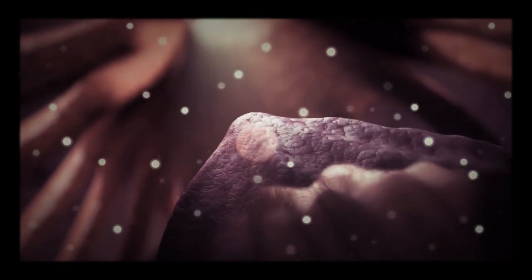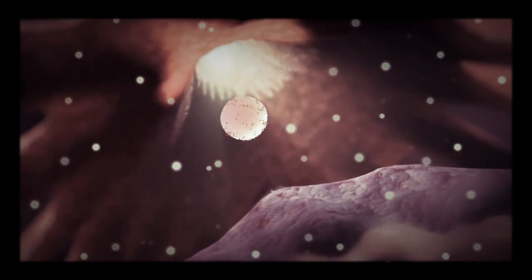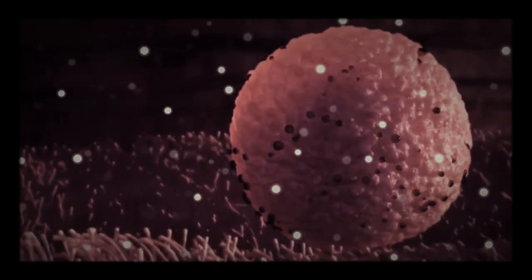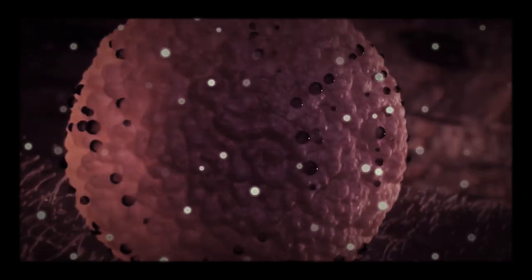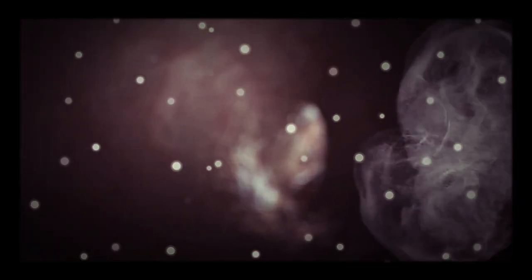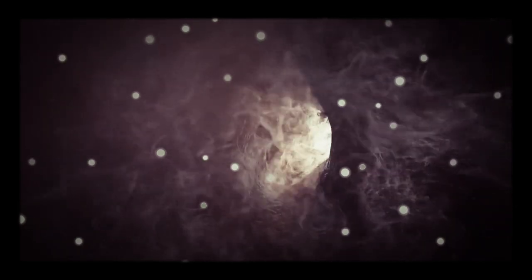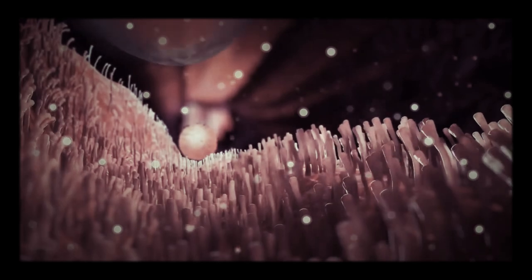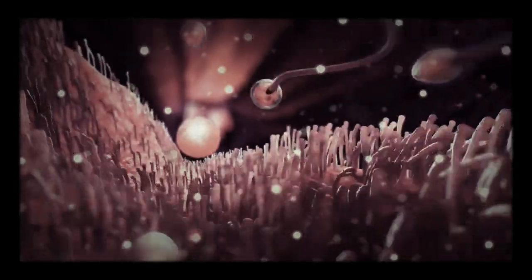If sexual intercourse happens, the sperm cells first reach the womb and then the fallopian tube where they can meet the egg cells. If one penetrates, fertilization can take place which can result in pregnancy.